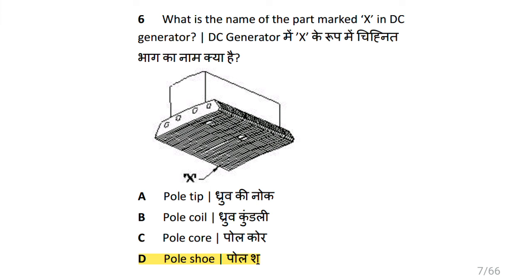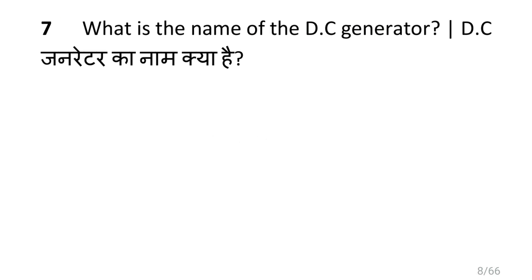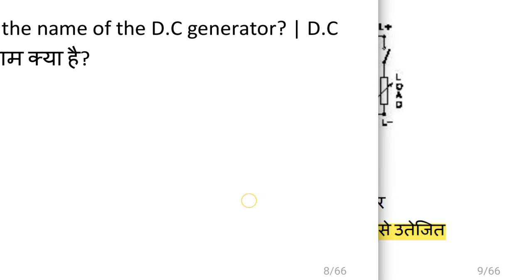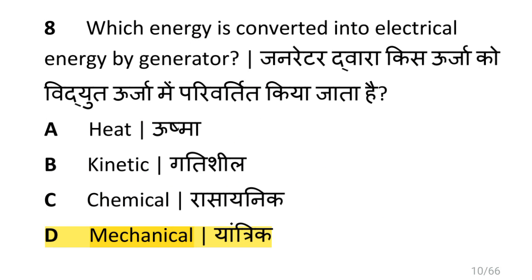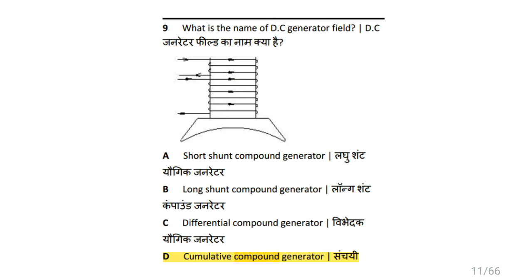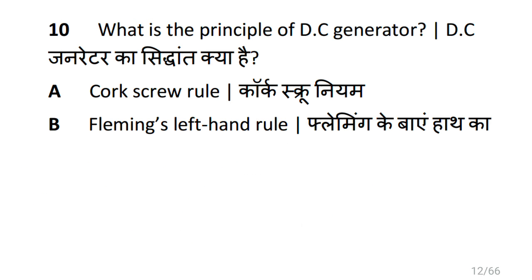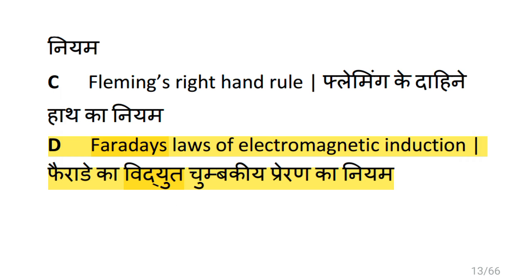What is the name of the part marked X in DC generator? That is pole shoe. What is the name of the DC generator? That is separately excited generator. Which energy is converted into electrical energy by a generator? That is mechanical energy. What is the name of the DC generator field shown? That is cumulative compound generator. What is the principle of DC generator? That is Faraday's law of electromagnetic induction.